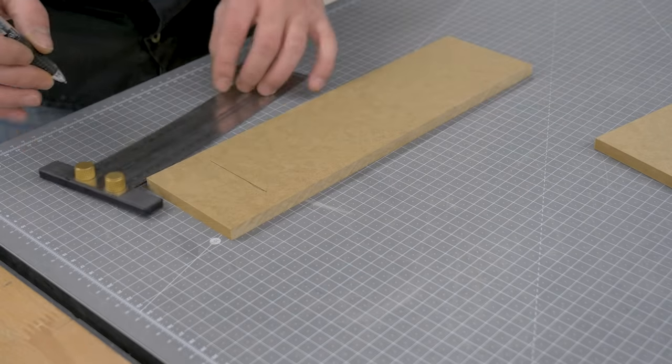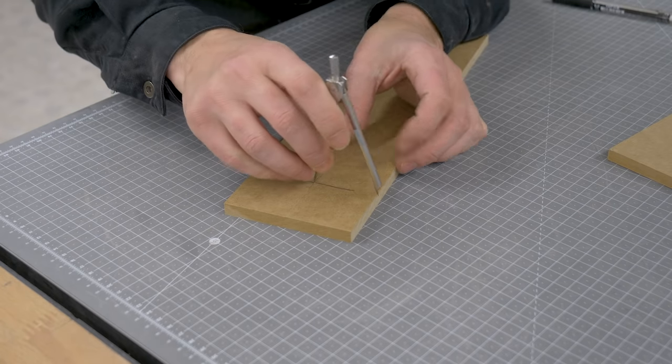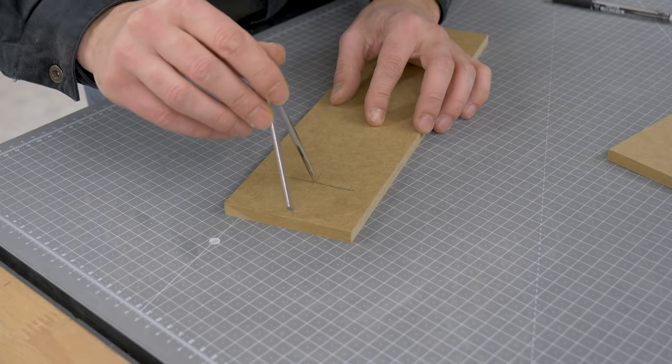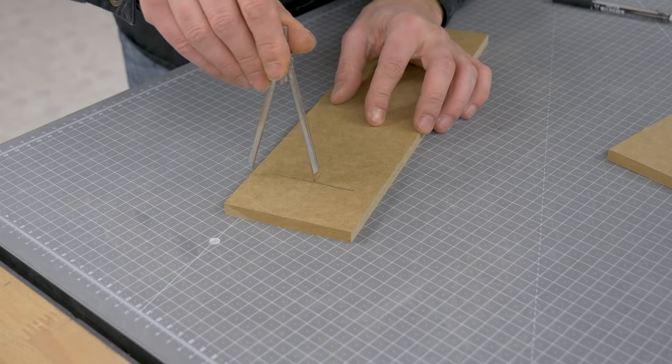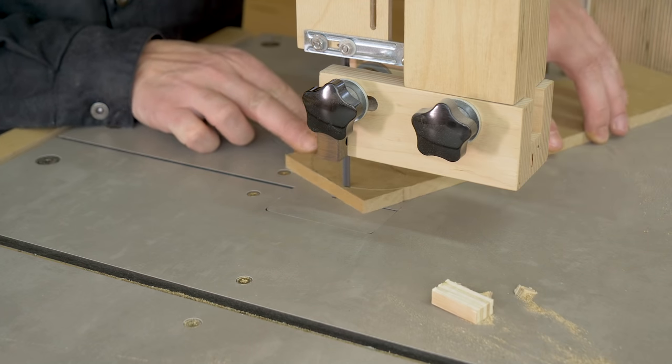I'll find the center of the piece, use a compass and mark the radius. I'll cut it with a bandsaw, but you can use a jigsaw too.